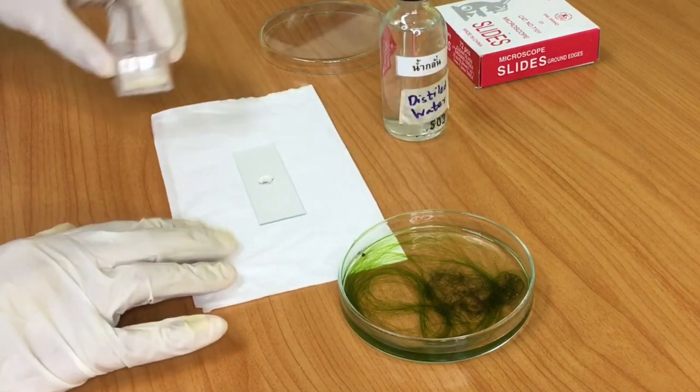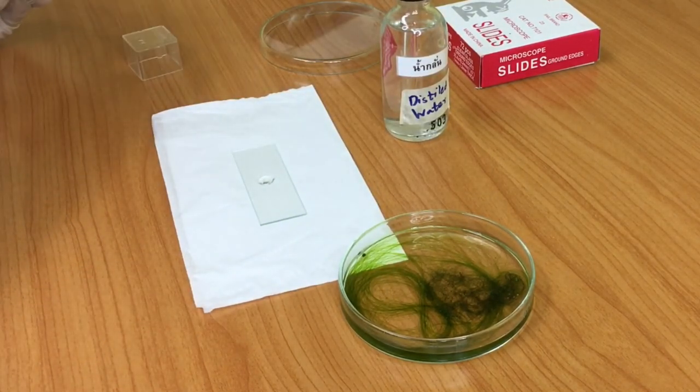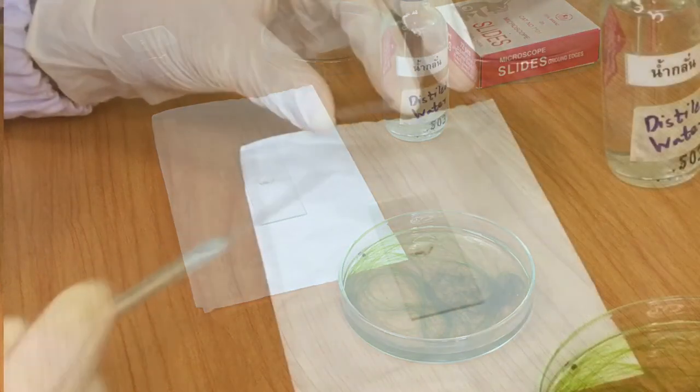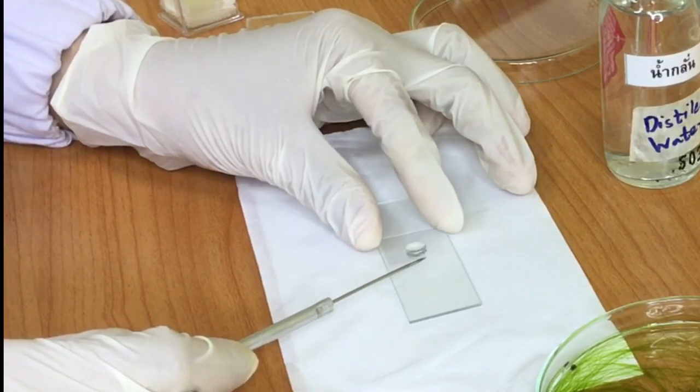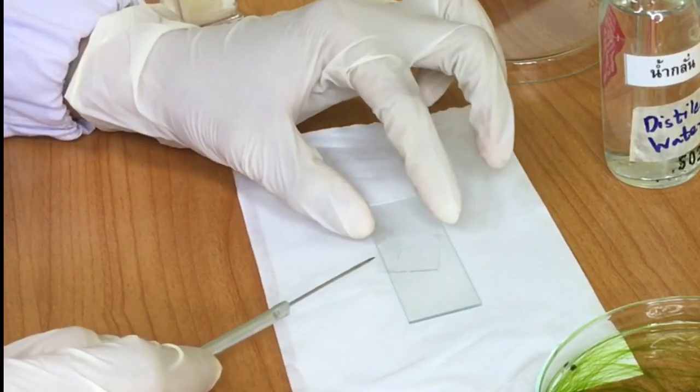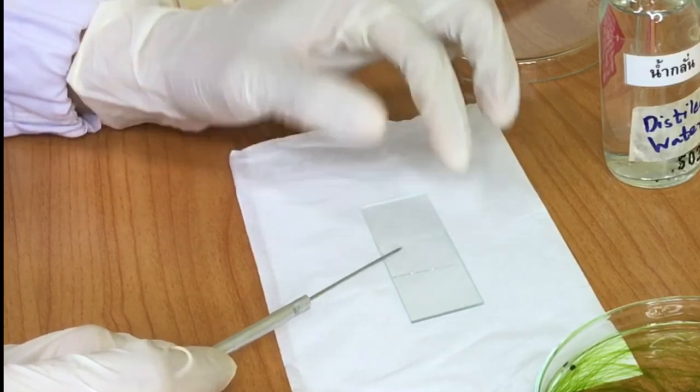Second, add a drop of water onto the specimen on the slide. Then, place a cover slip so that one side touches the water drop. Now, you use the tip of a needle or tips of forceps to lower the cover slip down slowly to avoid air bubbles.